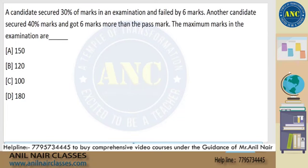The question is: A candidate secured 30% of marks in an examination and failed by 6 marks. Another candidate secured 40% of marks and got 6 marks more than the passing marks. Find the maximum marks in the examination.